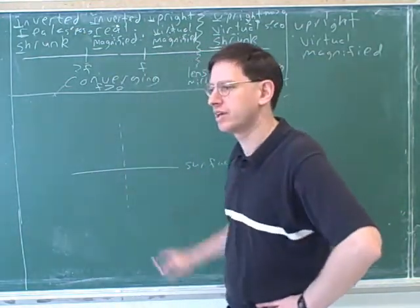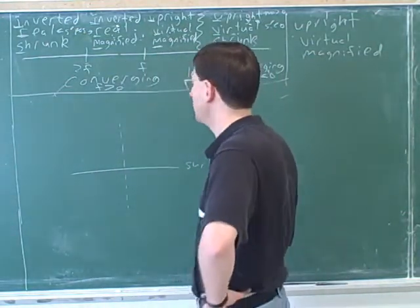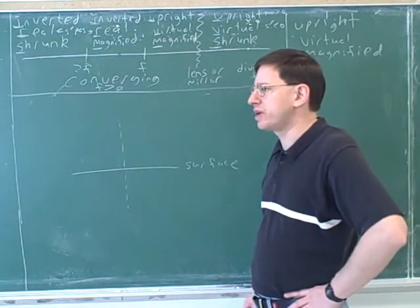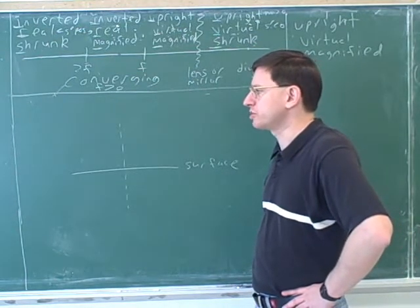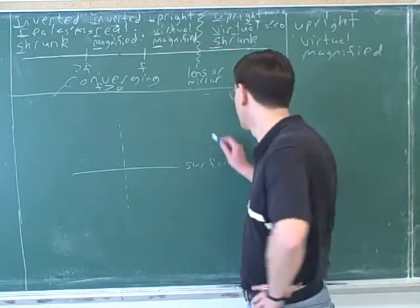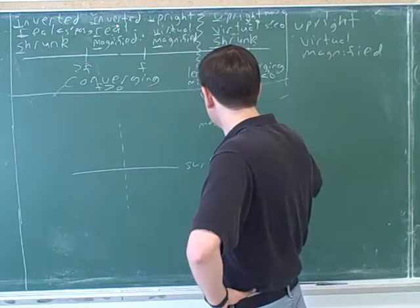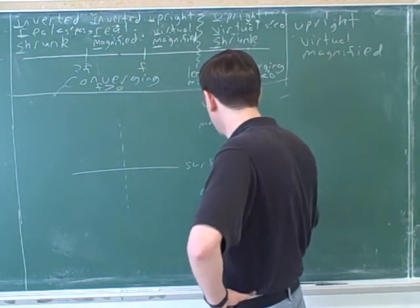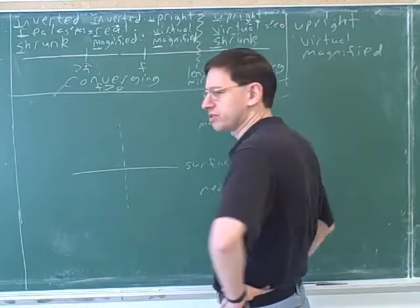Alright, so let's say that this is our surface. What is a surface? A surface is the border between two different mediums. So this would be medium one, and this would be medium two.